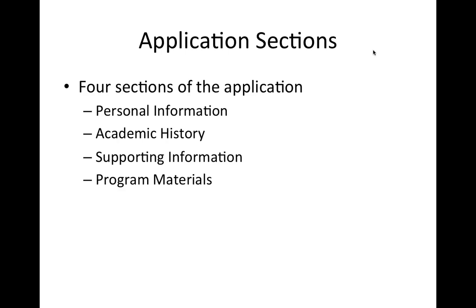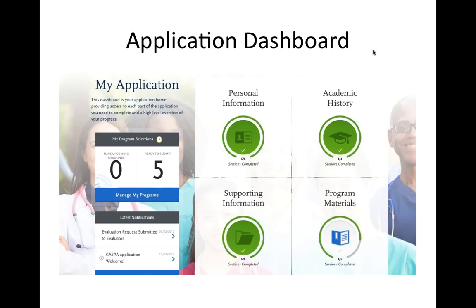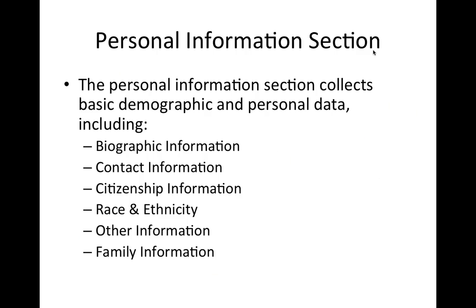The application is separated into four sections: Personal Information, Academic History, Supporting Information, and Program Materials. The Application Dashboard will help you navigate the different sections of the new application, as well as access your profile, instructions and FAQs, program selections, notifications, and monitor your progress of certain sections.